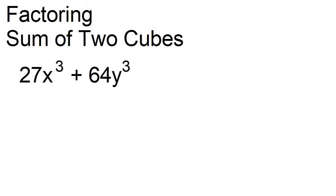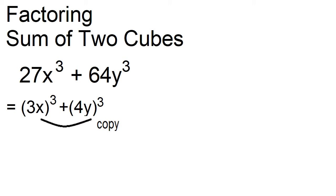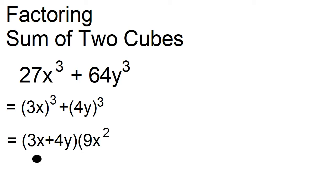Factor 27x cubed plus 64y cubed. This can be written as the cube of the quantity 3x plus the cube of the quantity 4y. The factors are 3x plus 4y and 9x squared minus 12xy plus 16y squared.